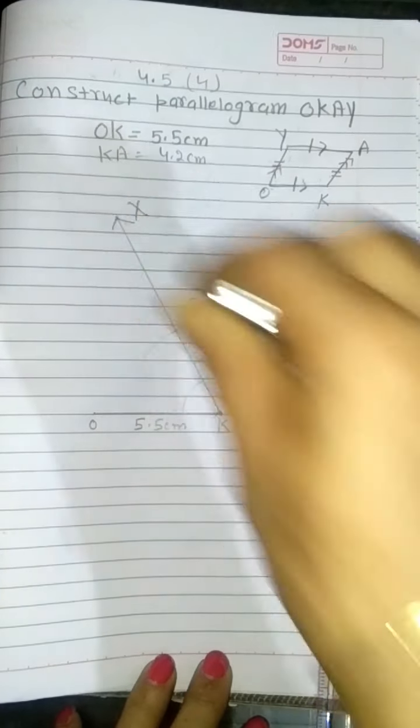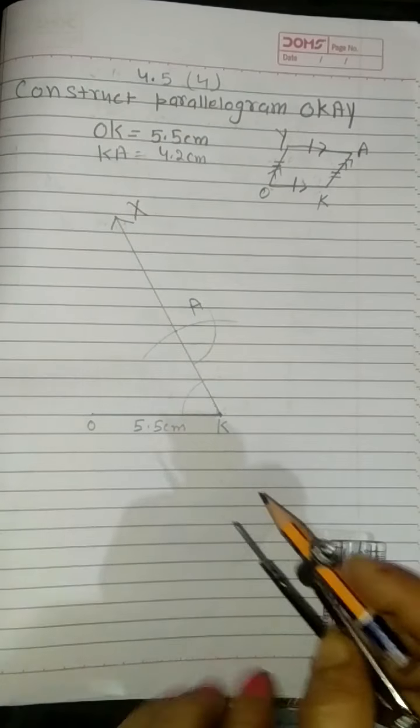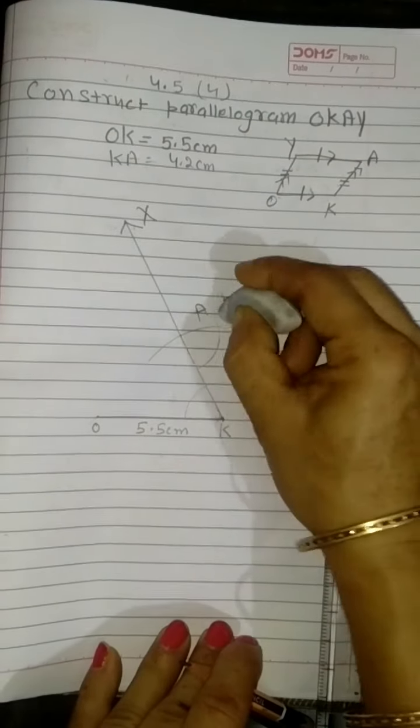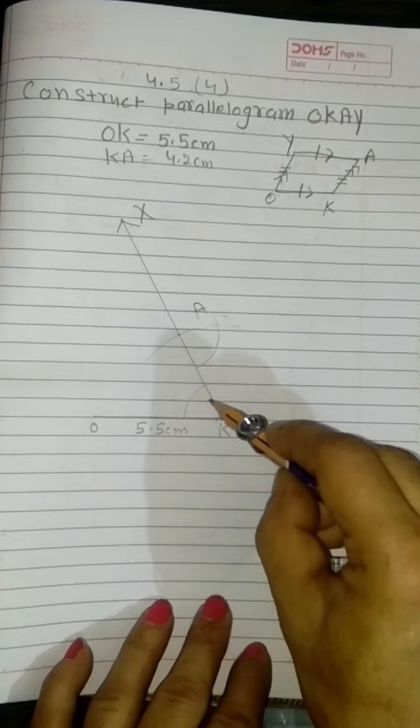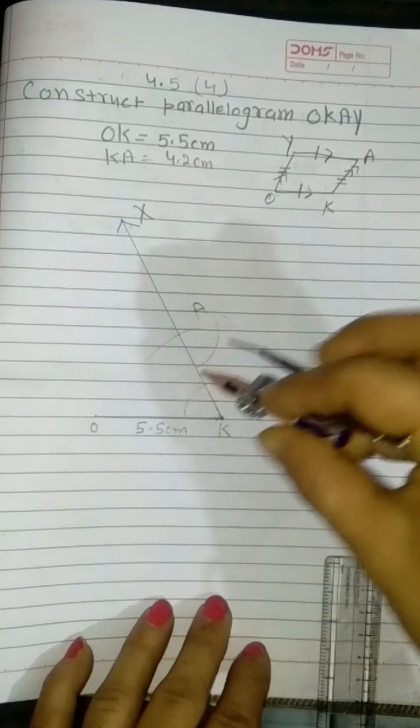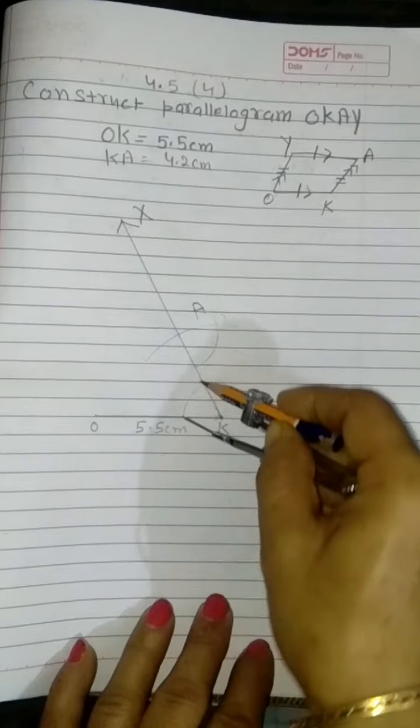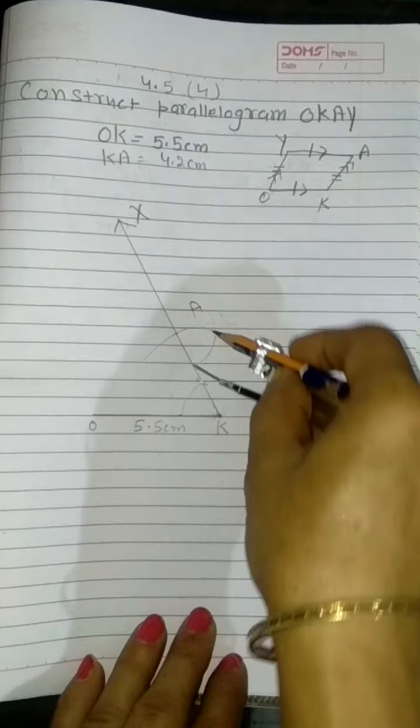Now I will draw the copy of the angle. With this radius I draw here an arc to the other side. Now with this radius cut this line.